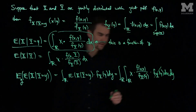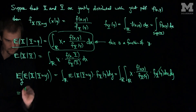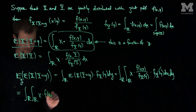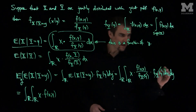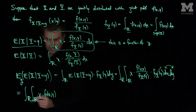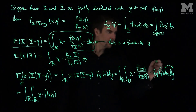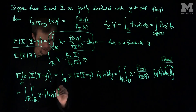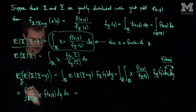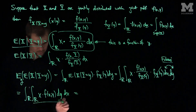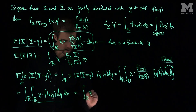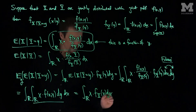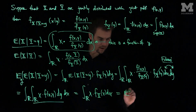Now the fy of y terms cancel out, and we have the double integral over r of x times f of xy, with dx dy. Flipping the order of dx and dy by Fubini's theorem, we can write this as dy dx. When we integrate out the y variable, integrating f with respect to y gives the marginal of x, so this becomes the integral over r of x times fx dx, which is exactly the expected value of the random variable x.